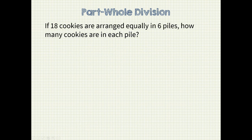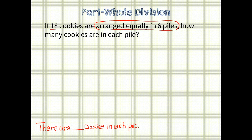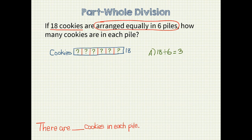This problem is very similar to the one we just finished. If 18 cookies are arranged equally in six piles, how many cookies are in each pile? This problem can be modeled with just one unit bar to represent 18 cookies. Now I will divide the 18 cookies into six piles. We need to find out how many cookies are in each pile, so my problem becomes 18 divided by 6, which is 3. There are three cookies in each pile.